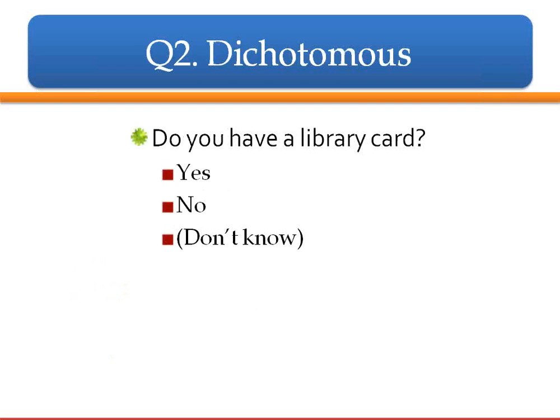Here's a dichotomous question: 'Do you have a library card?' It's either yes or no. In this option, I would give them a 'don't know' as well, but it's still essentially a dichotomous question — and you can use it to filter respondents.